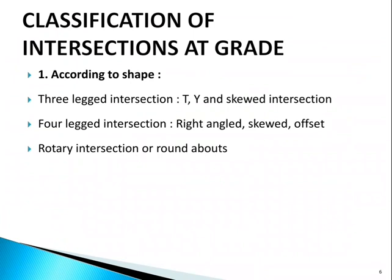According to type and shape, there are three-legged intersections like T, Y, and skewed; four-legged intersections like right-angle, skewed, and offset; and lastly rotary intersection or roundabout.